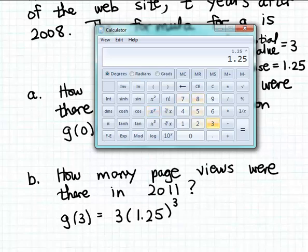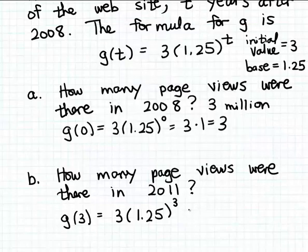So 1.25 cubed, that's 1.953125 you see there, and then we're going to multiply that by 3 - of course multiply that by our initial value of 3, and so we end up here with what you see.